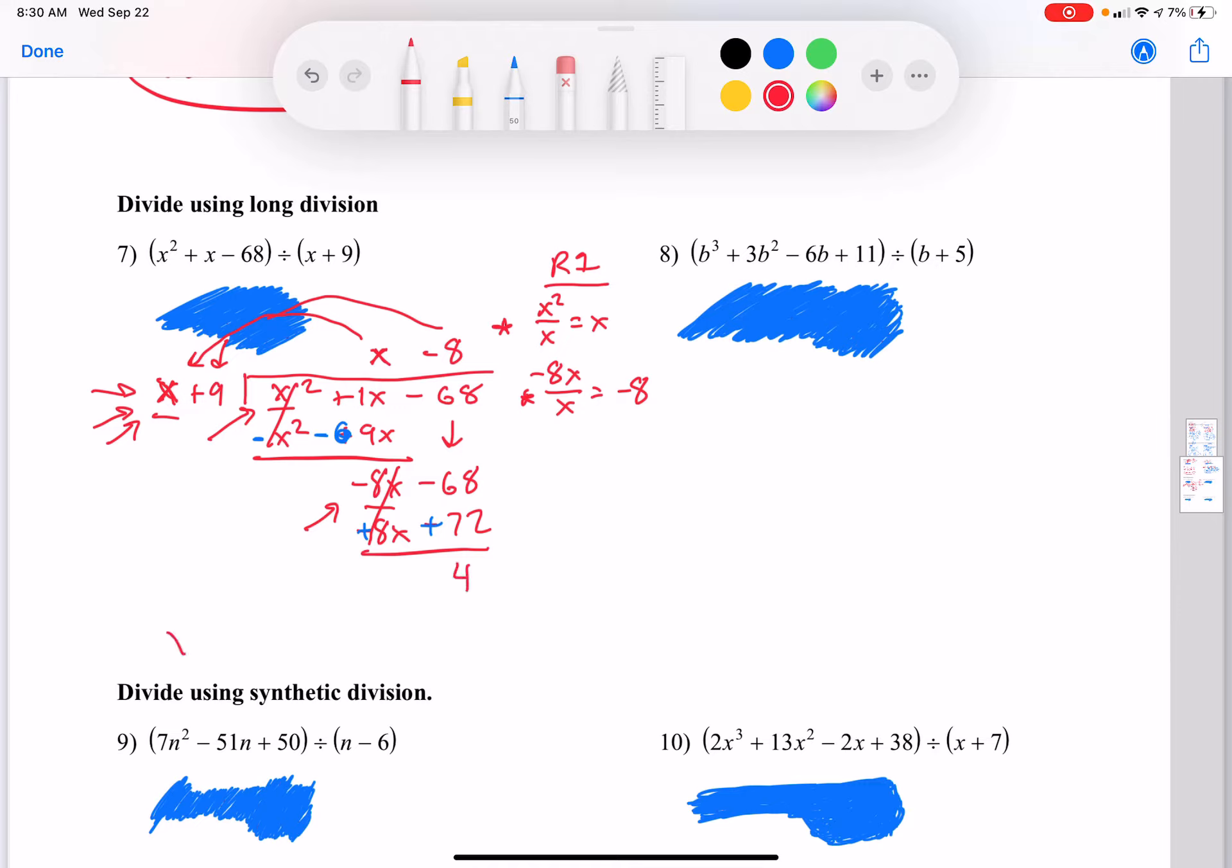These are going to cancel as usual, and negative 68 plus 72 is 4. So my answer is x plus 9 plus 4 over x plus 9. And some of y'all are probably thinking, oh I really like synthetic division, can I just do synthetic division? The answer is no. You have to do long division on at least two problems on the quiz.